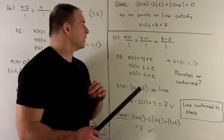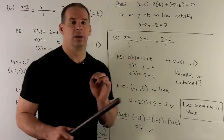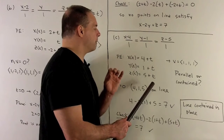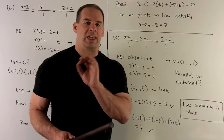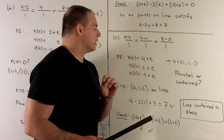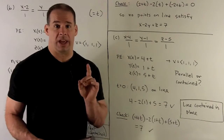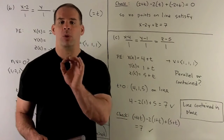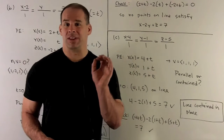For our third line, we use (x minus 4) over 1 equals (y minus 1) over 1 equals (z minus 5) over 1. Setting each term equal to t gives our parametric equations. We note we have the same direction vector v equals (1, 1, 1), so again the dot product with n1 is zero — either parallel or contained. Setting t equals 0 gives the point (4, 1, 5). Putting that into the equation of the plane, we find this point satisfies it, meaning the entire line is contained in the plane.